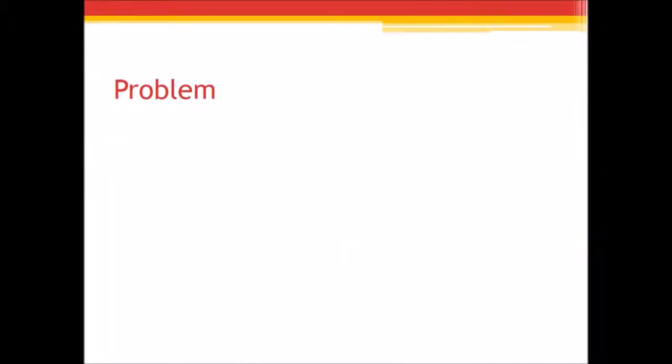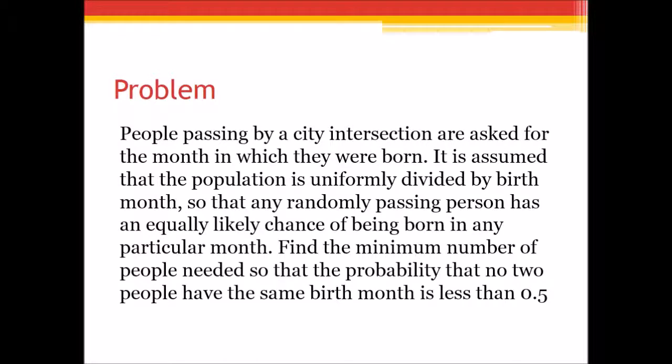Here's our problem. People passing by a city intersection are asked for the month in which they were born. It is assumed that the population is uniformly divided by birth month so that any randomly passing person has an equally likely chance of being born in any particular month. Find the minimum number of people needed so that the probability that no two people have the same birth month is less than 0.5.